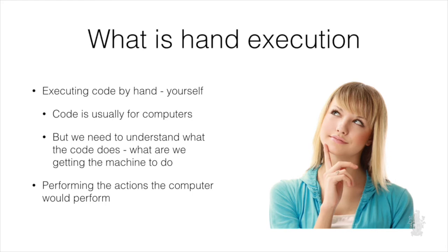So what is hand execution? When we're programming, we write code for the computer to execute. With hand execution, what we actually do is execute that code ourselves using paper and pencil. It's a fairly simple process, but it's really important to help us understand what the code we are writing does. We write code mostly for the computer to execute, but what we want to do is really understand what that code tells the computer to do. When we understand how the different statements get the computer to do different things, you can then better understand your code and create code that will do whatever you want, because you'll understand what each of the different actions gets the computer to do.